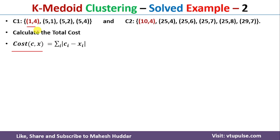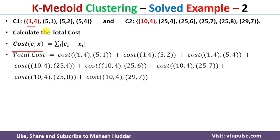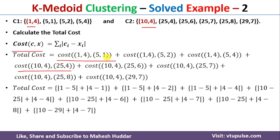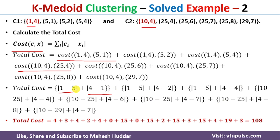In this case, we have two features per data point. The total cost includes: cost from (1,4) to (5,1), (5,2), (5,4), and similarly cost from (10,4) to its non-medoid points. For example, cost from (1,4) to (5,1) = |1−5| + |4−1| = 4 + 3 = 7. After solving all such cost expressions, the total cost of this cluster assignment is 108.